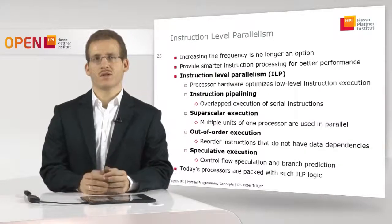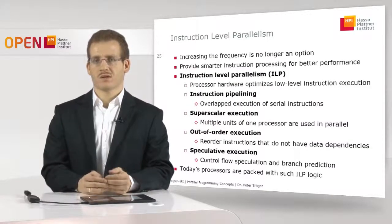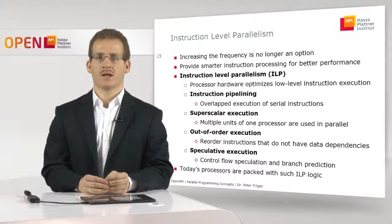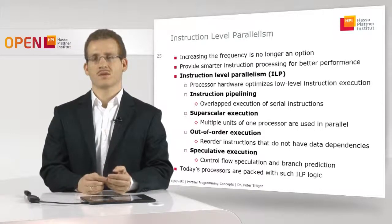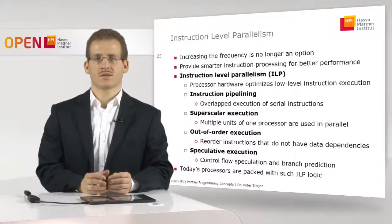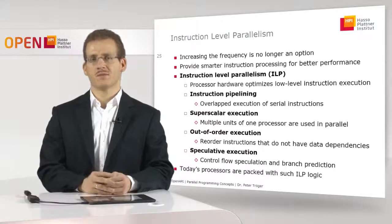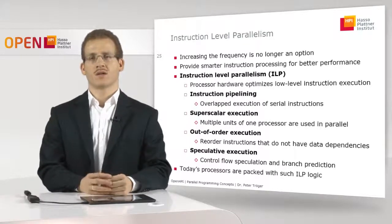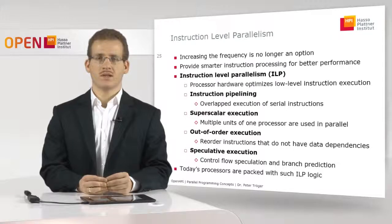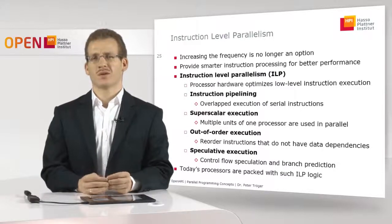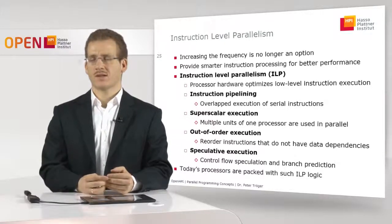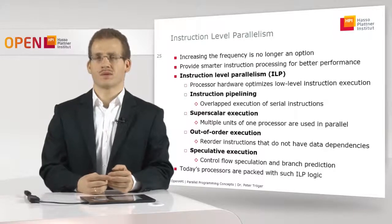A typical or traditional way of doing smarter instruction processing inside the hardware is called Instruction Level Parallelism, ILP. The idea here is that the processor hardware itself — the control unit, the arithmetic logical units, and other parts of the processor — tries to take the incoming instruction stream, assembler instructions, machine code, and process them in a smarter way in order to get faster results. ILP is a term that summarizes several concepts that are well established for many decades and constantly improved by the processor vendors.